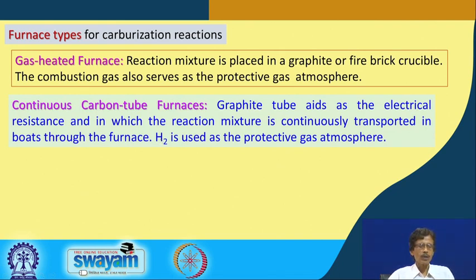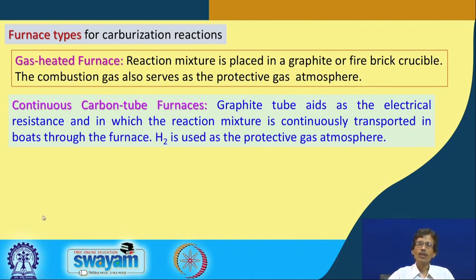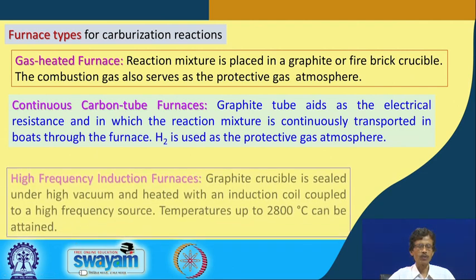Another furnace type is the continuous carbon tube furnace, made entirely of carbon (graphite). Any degradation of carbon from the furnace also contributes to carbide preparation. The graphite tube acts as electrical resistance for heating, the reaction mixture is transported through it on graphite boards, and hydrogen is used as the protective gas atmosphere.